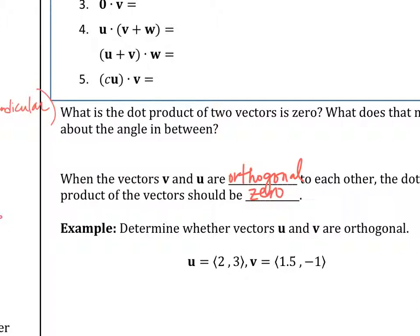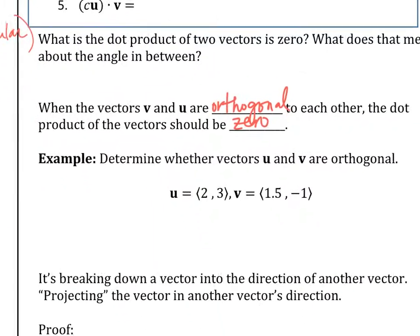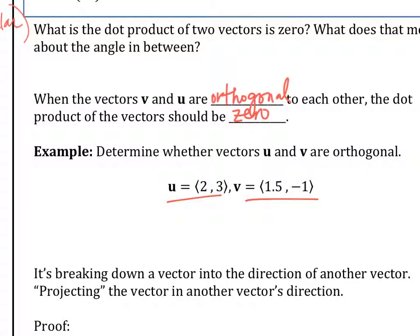Very important property: if the dot product of two vectors is zero, they must be perpendicular. Are these vectors orthogonal? Yes — because the dot product is zero. Dot product is zero, therefore it is orthogonal.